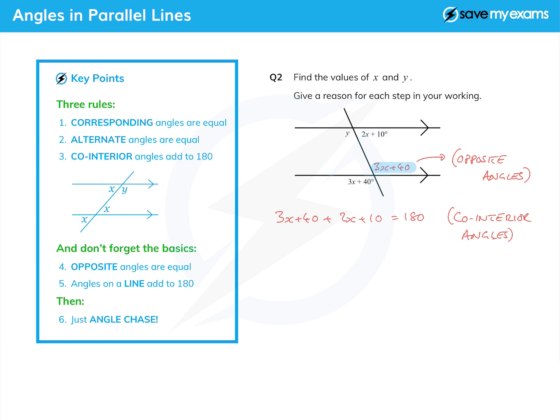And that just gives me a little equation to solve. So let's lump everything together. Let's put the 3x and the 2x together—that gives me 5x. And then the 40 and the 10 give me 50. So 5x plus 50 is 180.